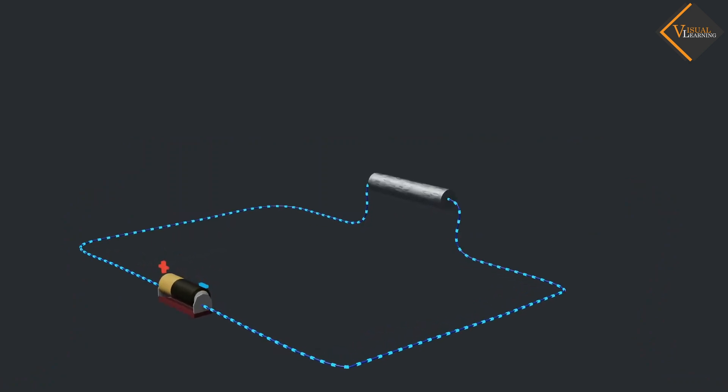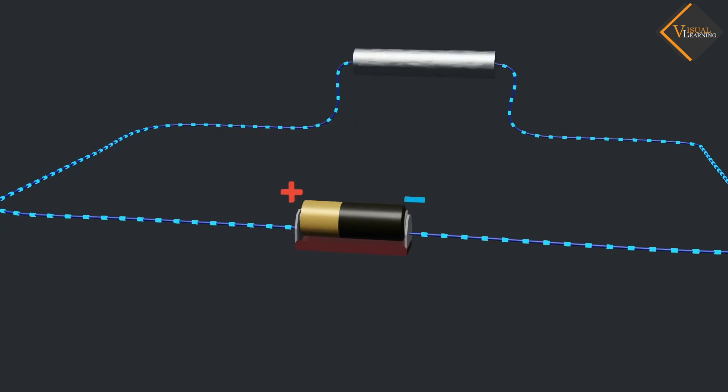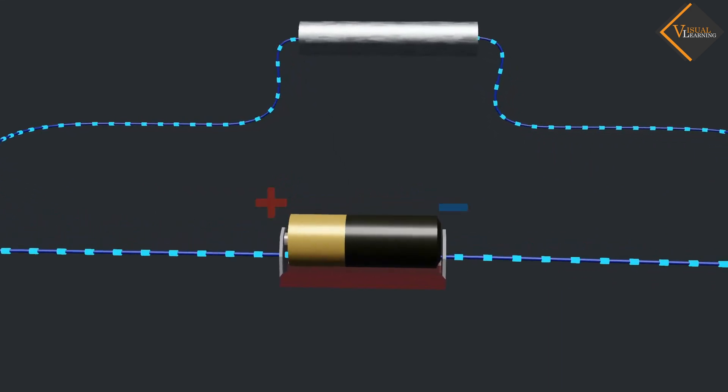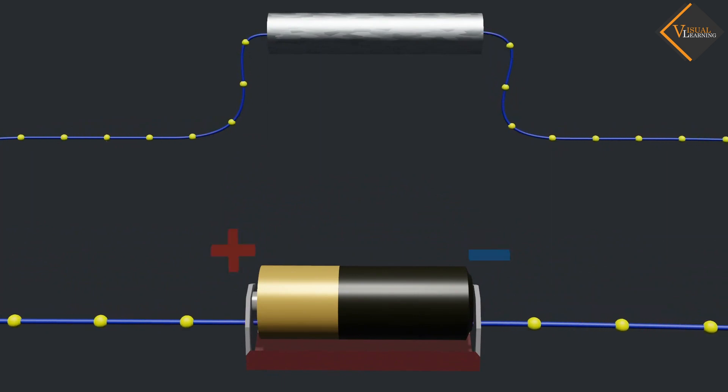To make electrons flow, we connect one end of the wire to the positive terminal of a battery and the other end to the negative terminal. We observe that electrons flow from negative to positive, while the current flows from positive to negative.